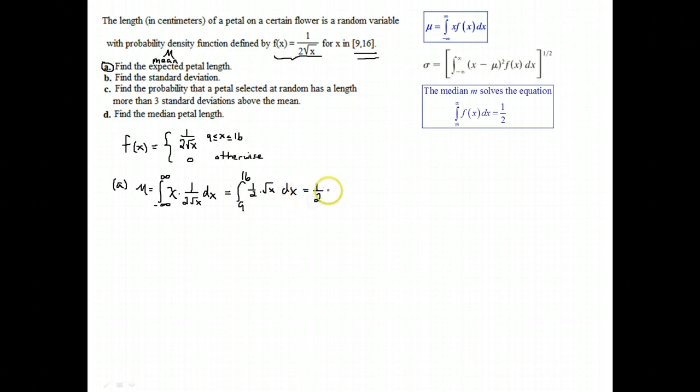We integrate that. Let me pull out the half and make it x to the half. Then we're going to add one and get 3 halves. So we have 2 thirds x to the 3 halves. Evaluate it from 9 to 16. Then the half and the 2 thirds can just be called 1 third.